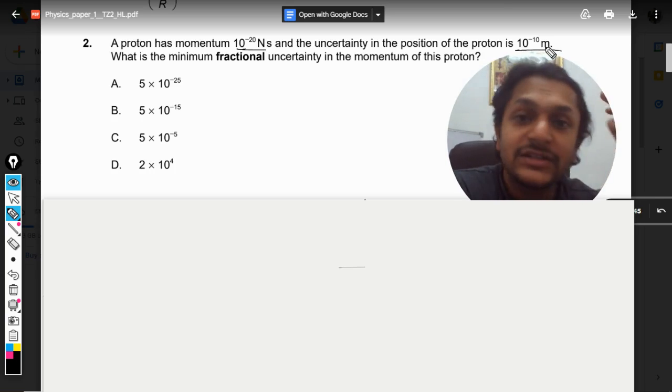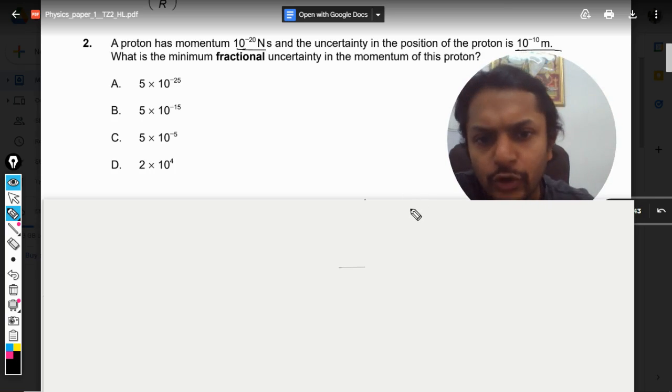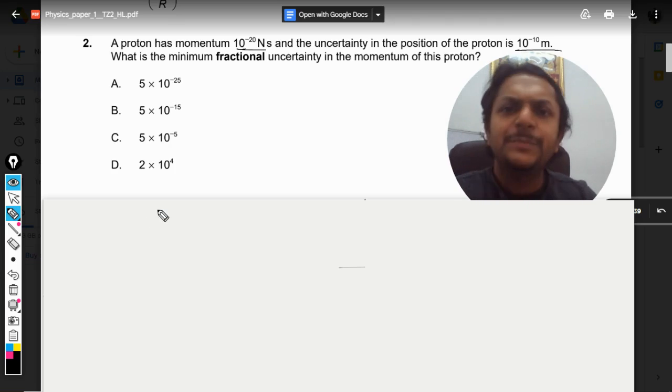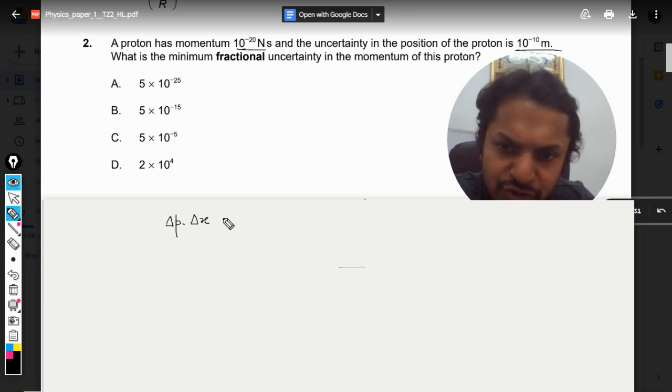Anyways, so in this question we know that the principle of uncertainty will be used and it is ΔP dot ΔX, that is position, is equal to h by 4π. So this is a general formula for principle of uncertainty.